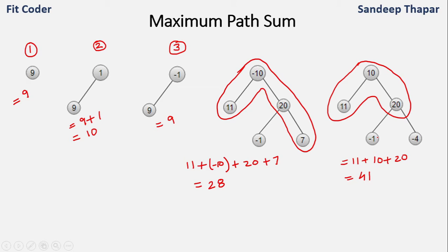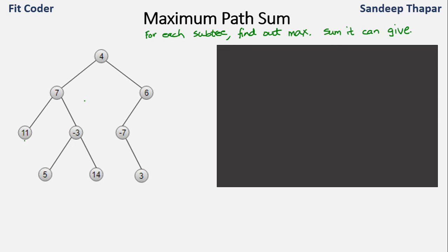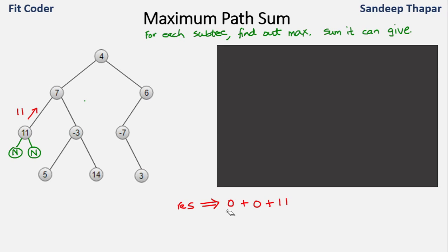Now that we understand the problem, let's build the logic to solve it. For each subtree we want to find the maximum sum it can give. For the subtree rooted at node 11, the left and right children are null, so the maximum sum it can give is 11. We store these sums in a result variable. With lsum and rsum both being 0 and root being 11, the maximum sum is 11.